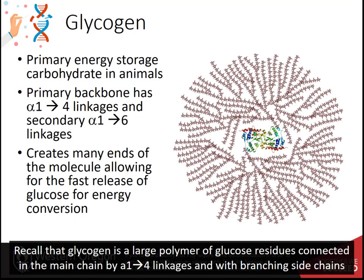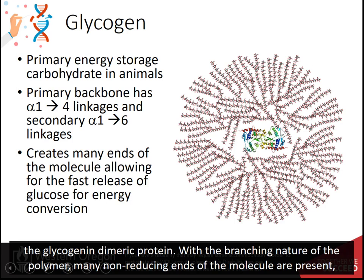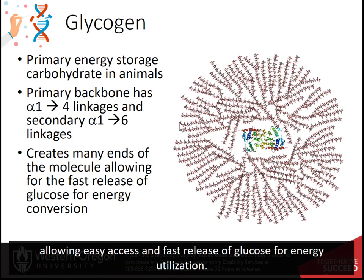Recall that glycogen is a large polymer of glucose residues connected in the main chain by alpha-1,4 linkages, with branching side chains about every 12 to 15 residues at the alpha-1,6 position. The reducing ends of the carbohydrate, two for each polymer, are connected to the glycogenin dimeric protein. With the branching nature of the polymer, many non-reducing ends of the molecule are present, allowing for easy access and fast release of glucose for energy utilization.